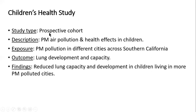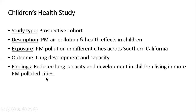Finally, the Children's Health study was a prospective cohort study. This time, they were not looking at premature mortality but trying to understand the cause of these long-term health effects — how air pollution can predispose people to a premature risk of death. One hypothesis was that this might start in early childhood. The exposure was PM pollution in different cities across Southern California, where pollution levels vary across the air basin. The outcome was lung development and lung capacity. The findings were reduced lung capacity and development in children living in more polluted cities — very shocking that effects can hit at such a fundamental level.